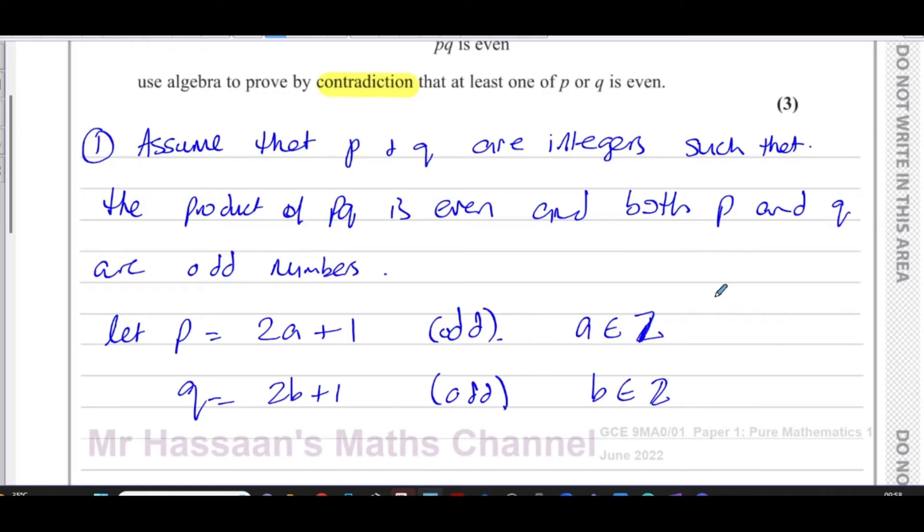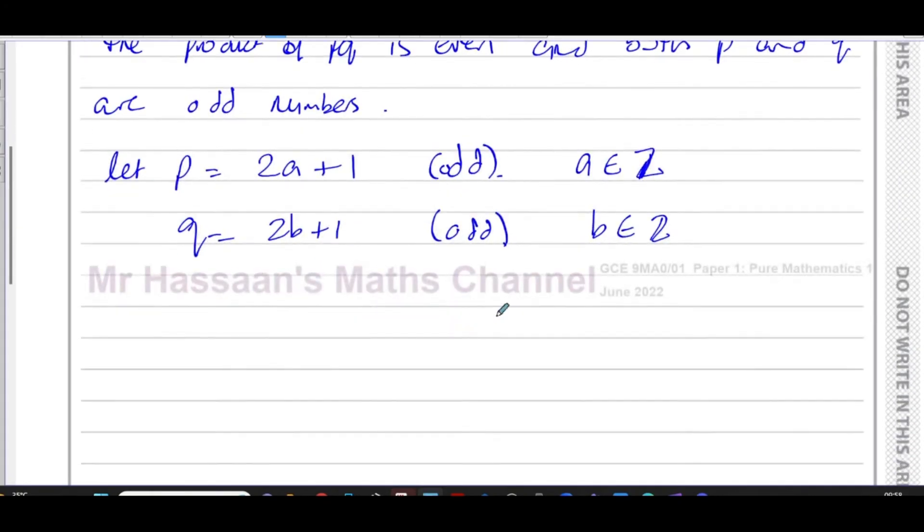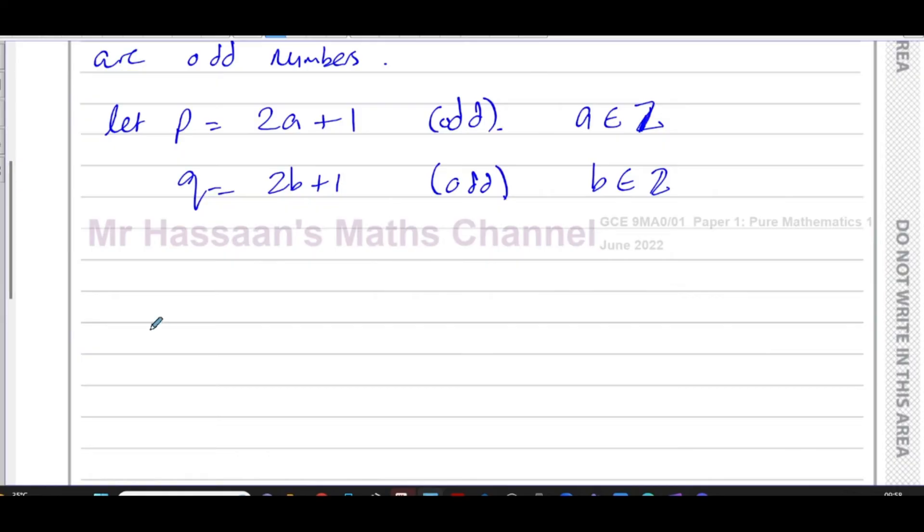What you should not really do is say 2N plus 1 and then Q also 2N plus 1. Then they're both odd numbers, but they're both the same odd number. Here, there's any variation of different odd numbers. So they could be the same, they could be different depending on the value of A and B. So now let's show that the product PQ. So P times Q is equal to 2A plus 1 times 2B plus 1, which gives us 4AB plus 2A plus 2B, and then 1 times 1 which is 1.